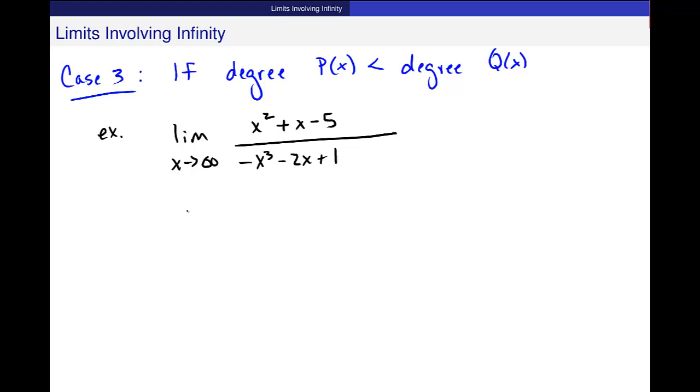And again, I'll use this dominant term property. And I get x squared over negative x cubed. I divide or use those exponent powers that we worked on. And then, 1 over negative x.